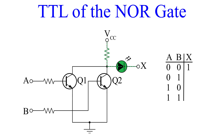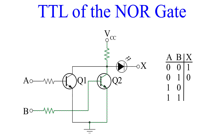Next, we turn input B on and leave A at 0. Q2 now has a bias voltage, allowing VCC to flow through Q2 and straight to ground. This turns our LED off, and so for inputs A equals 0 and B equals 1, our output is 0.